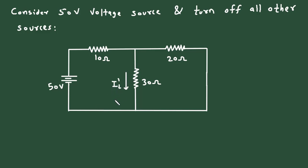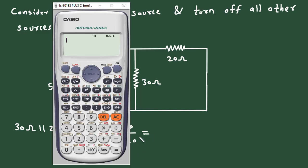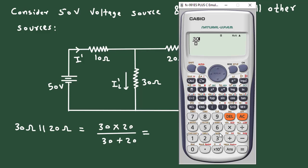Now we can easily find the value of current IL prime. First we need to find the total current I prime. Here the 30 Ohm and 20 Ohm are connected in parallel, so 30 multiplied by 20 divided by 30 plus 20, which equals 12 Ohm.